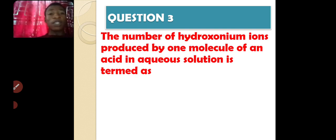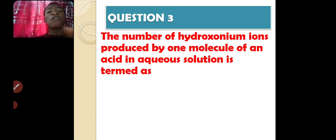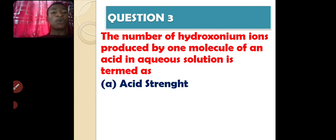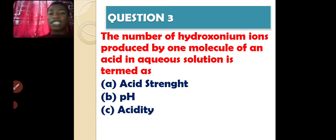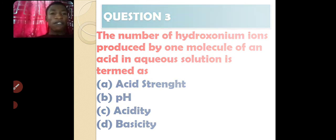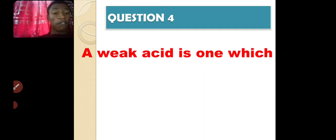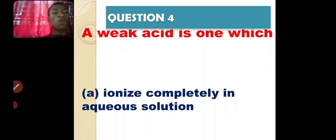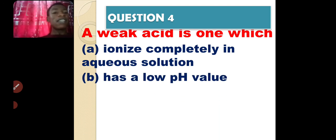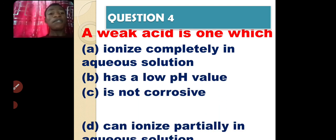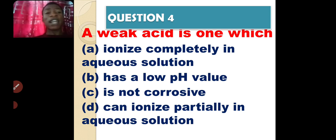Question three: the number of hydronium ions that will be produced from one molecule of an acid is known as what? Is it acid strength, pH, acidity, or the basicity of the acid? Question four: a weak acid is one which — is it ionized completely? That has a low pH value? That is not corrosive? Or that is ionized partially in solution?